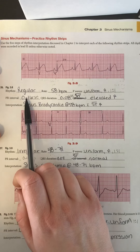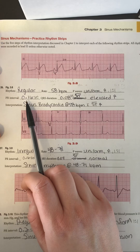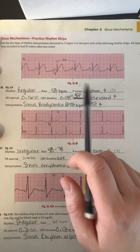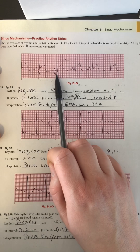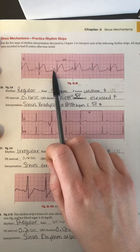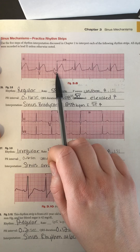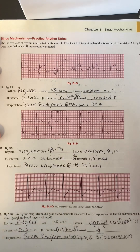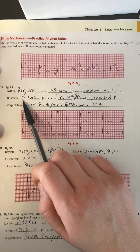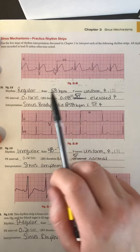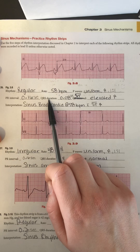Next we'll look at the PR interval. With sinus mechanisms we want it between 0.12 and 0.20 seconds — that's normal. I found a P wave and QRS complex that lined up well with the boxes. I marked from where the P wave starts to where the QRS complex starts, and got four small boxes across. Four small boxes equals 0.16 seconds, because one small box is 0.04 seconds.